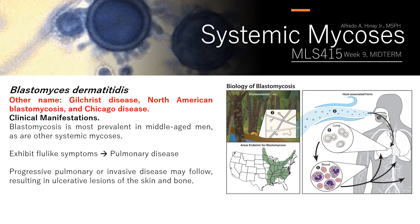Geographically restricted means the fungal agent causing systemic mycosis can only be found in that endemic area. For example, the endemic area for blastomycosis is North America, which is why the disease is named accordingly. The disease names are usually based on where they are endemic.